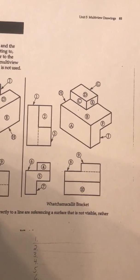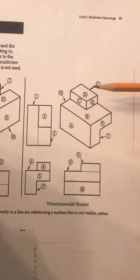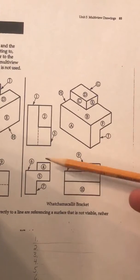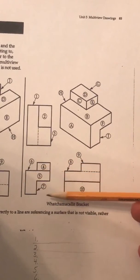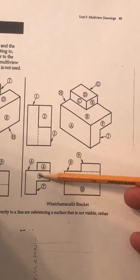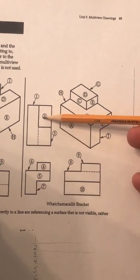Now, the purpose of this activity, of course, is to relate what lines, edges, and surfaces on one view, in this case the isometric view shown here, relate to those lines, edges, and surfaces in our orthographic projection, our multi-view here with our front view, our side view, and our top view.